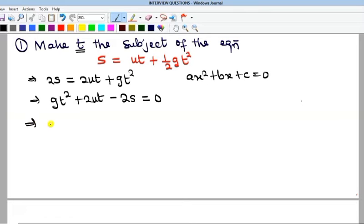Okay, so that now implies that my a, following this general form, is going to be g, and my b will be 2u, and that means my c will be negative 2s. That is the constant.